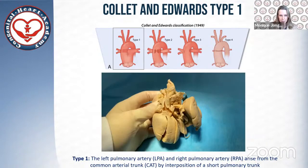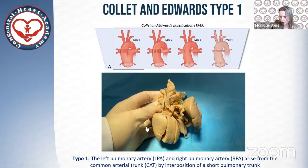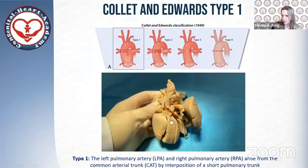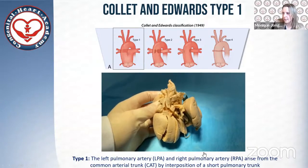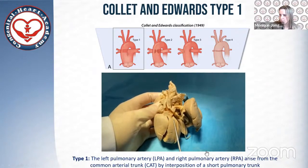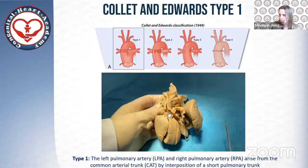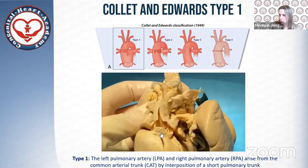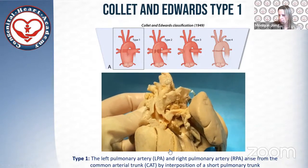What does it look like in a true human heart? We have here Collett and Edwards type one. I present the heart from an anterior view, cutting the hearts parallel to the ventricular septum with two vertical cuts, so you can look into either the right-sided or left-sided ventricle. This is the left ventricle, the right ventricle, and the level of the interventricular septum. You can see the level of the outflow tract with basically one vessel departing from the heart.